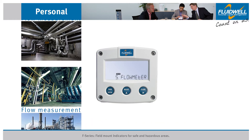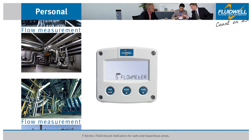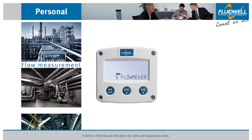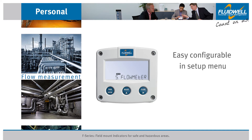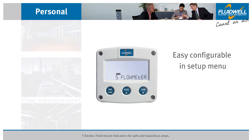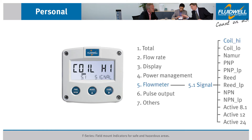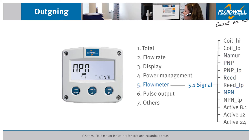For flow measurement, the F-Series accepts most signals from almost any flow meter. The various pulse input signals are easy configurable in the setup menu, like Coil, Namur, PNP, Reed switch, NPN or active input signals.